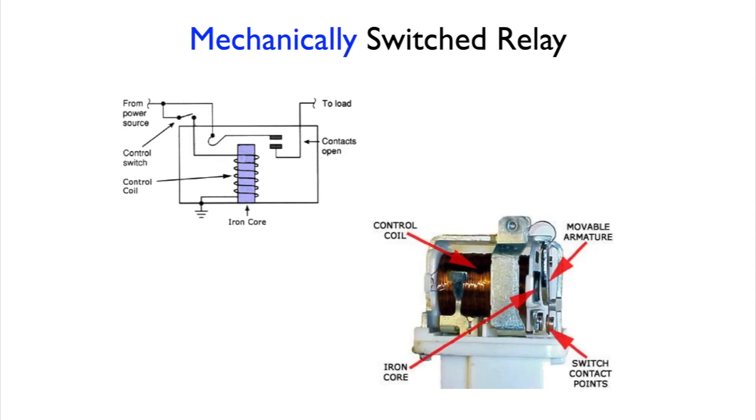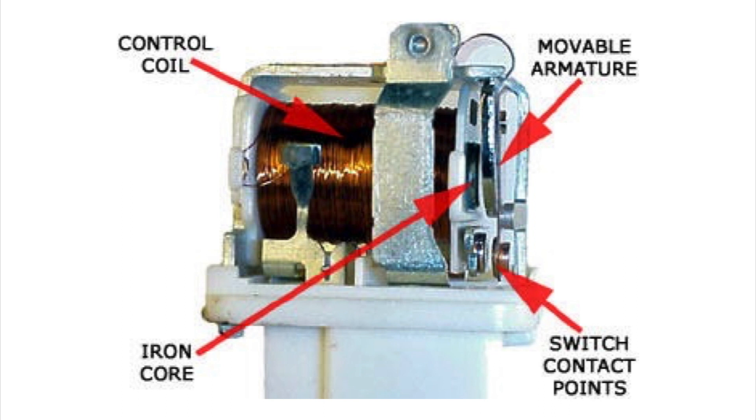On a mechanically switched relay the top picture is a typical electrical diagram of what's inside it and the bottom picture is an actual cutaway of what's inside. There are actually moving parts in there and here is a zoomed in view so that you can see it better.